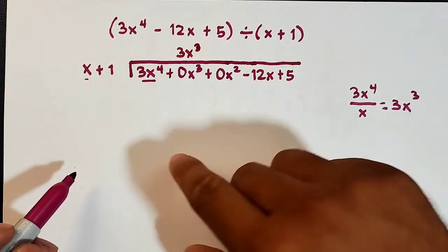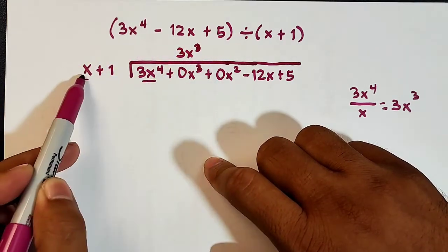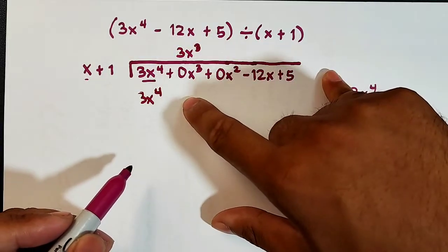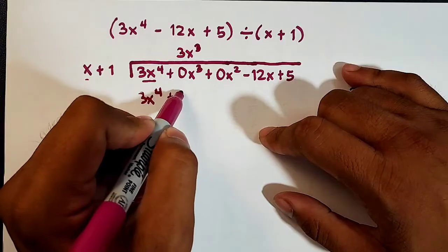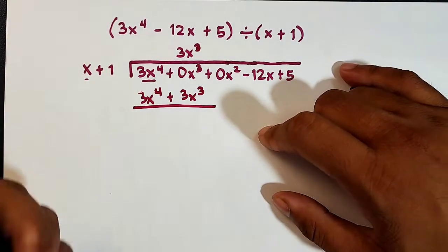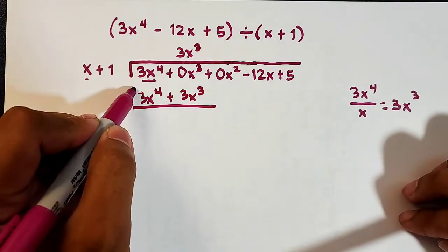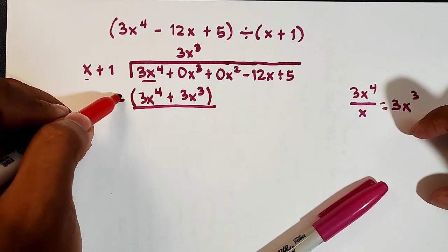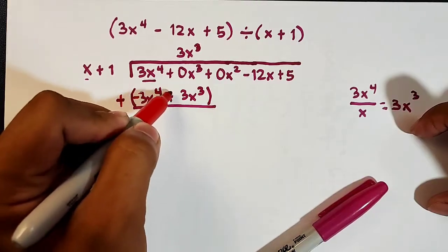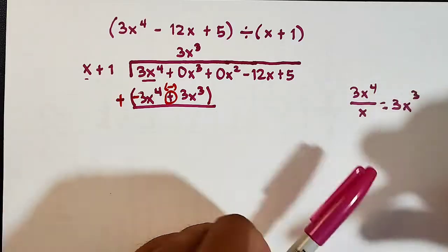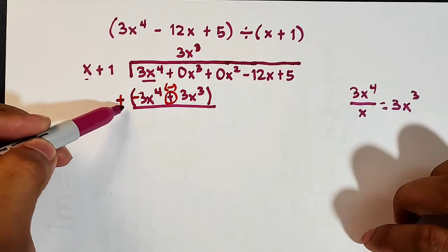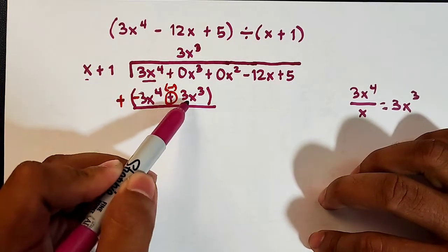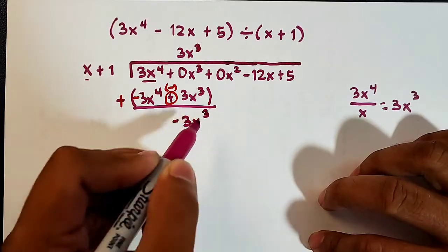Next is multiplying. We distribute 3x cubed one by one: 3x cubed times x is 3x to the fourth power; 3x cubed times 1 is plus 3x cubed. Then we subtract — don't forget to enclose this in parentheses. When subtracting, positive becomes negative. So 3x to the fourth power plus negative 3x to the fourth power becomes zero, and 0x cubed plus negative 3x cubed gives negative 3x cubed.